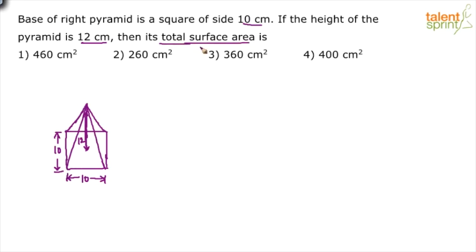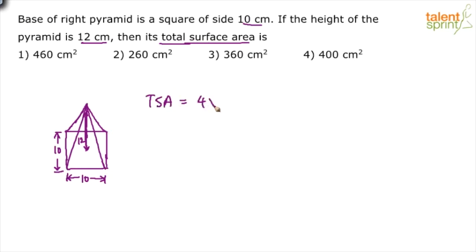He's asking us to find the total surface area. Total surface area is the sum of the areas of all surfaces. This pyramid has a base and four triangular lateral sides. The front one, the back one, and the two sides. So total surface area equals four times the triangular side area plus the base area.